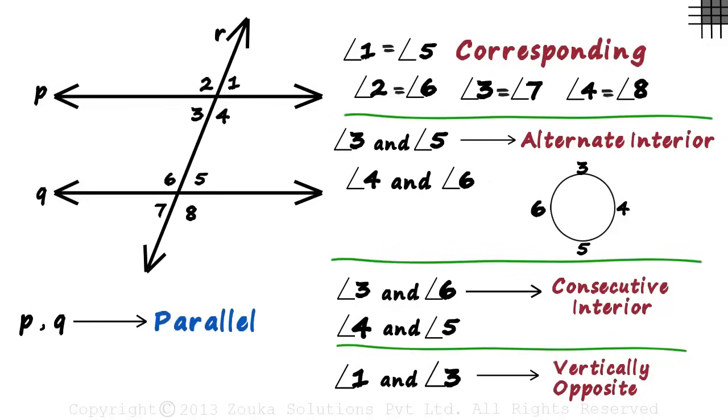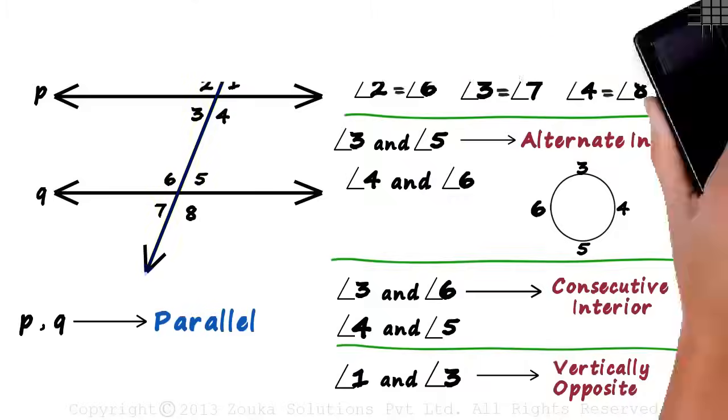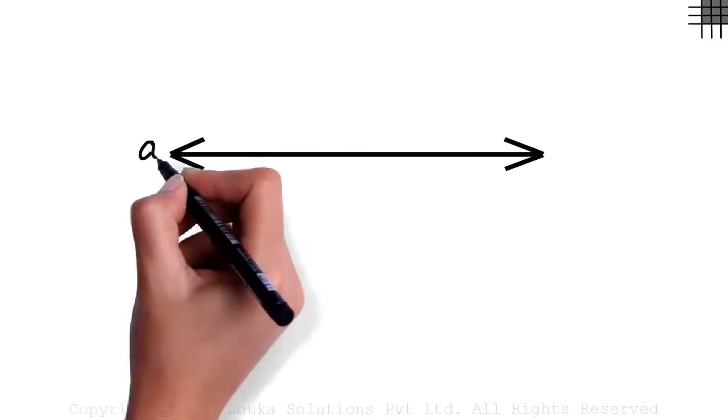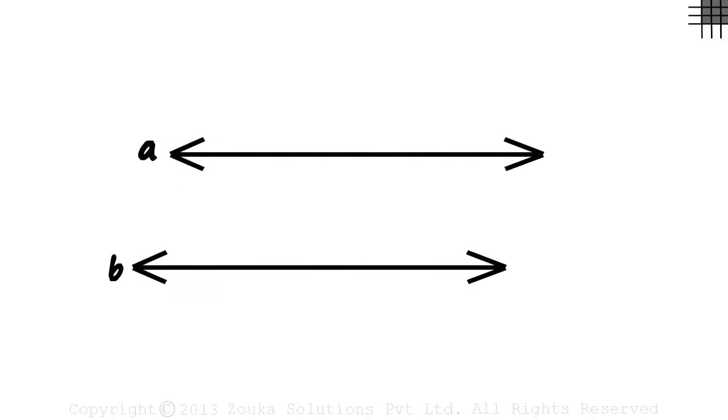These were the different types of angles that were formed when a transversal meets two parallel lines. On a new page, let's look at the beauty of these angles. Assume we have lines A and B which are parallel and transversal C which intersects them at two distinct points. As we already know, the transversal forms eight angles.